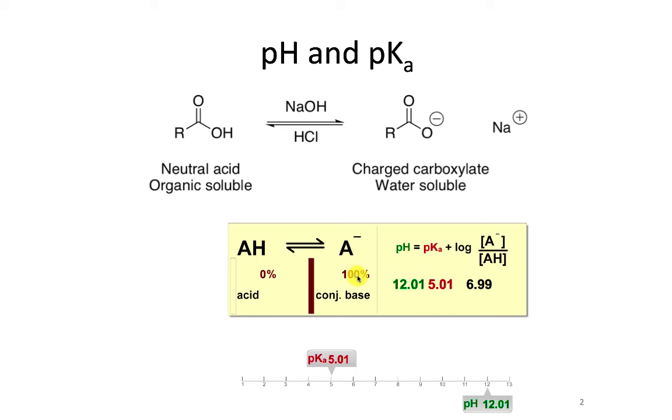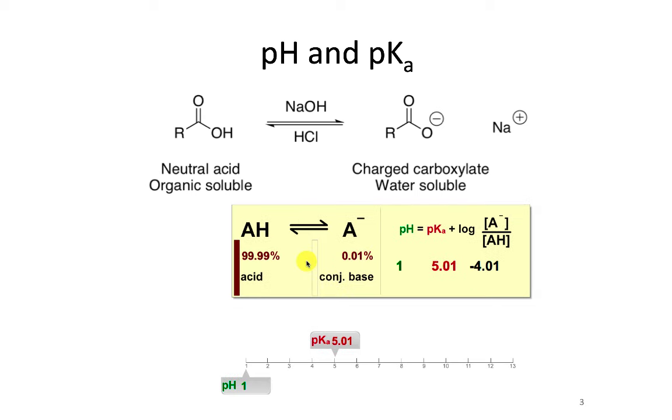Now, if we look over to the right, when we have that same carboxylic acid and carboxylate equilibrium, and now we acidify, so we add HCl, which is going to add a proton to the oxygen, making it neutral again, at a pH of 1, so a high concentration of H+ in solution, essentially all the molecules are in the neutral form.